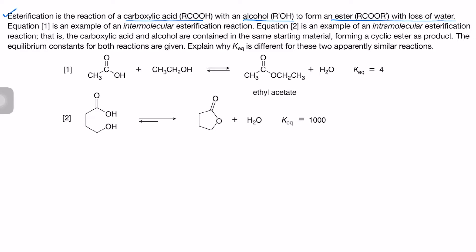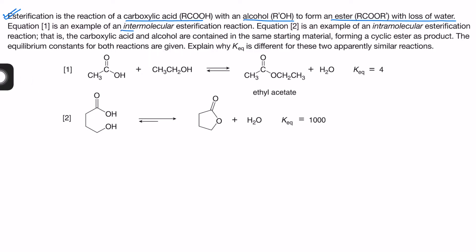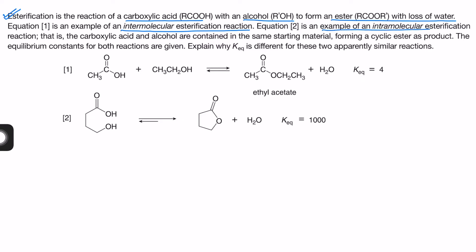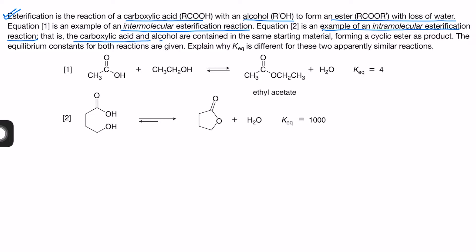Equation 1 is an example of an intermolecular esterification reaction. Intermolecular means between two molecules — one molecule is acetic acid and the other is ethanol. Equation 2 is an example of an intramolecular esterification reaction, meaning within the molecule, where carboxylic acid and alcohol are both present in the same starting material.